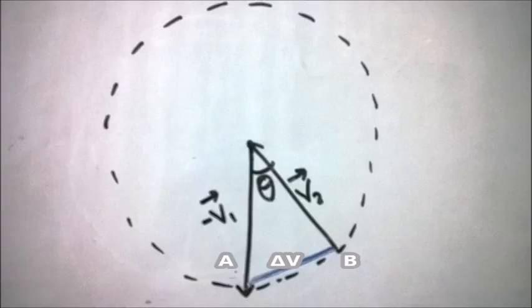We have already found that chord AB is equal to delta V. You would notice that as theta gradually becomes smaller, the arc AB and chord AB slowly come together till they are almost equal.